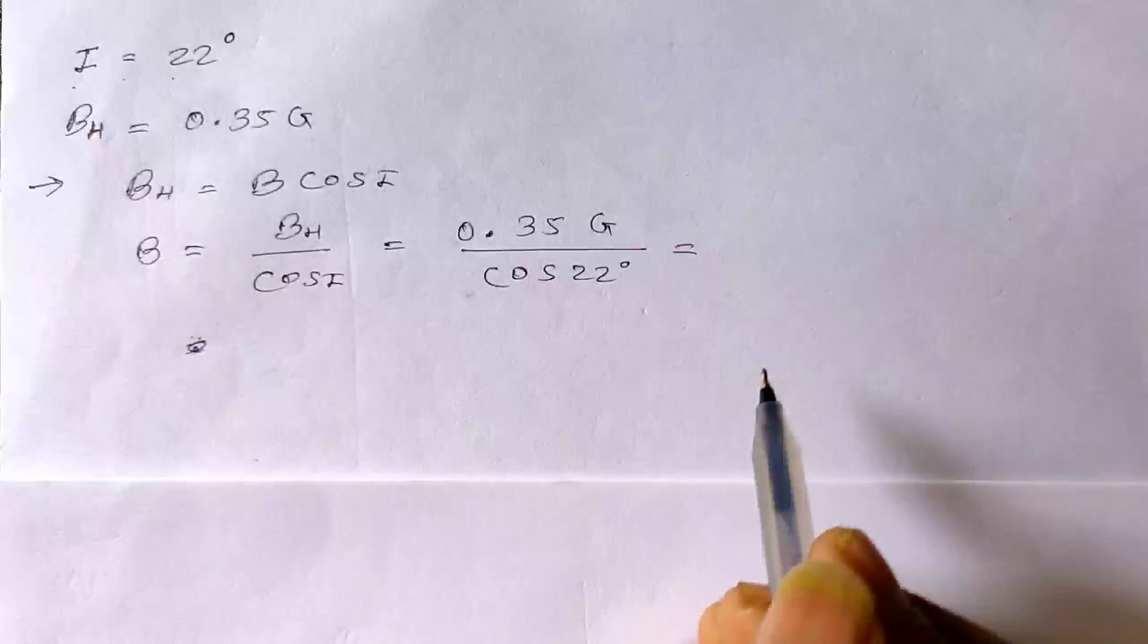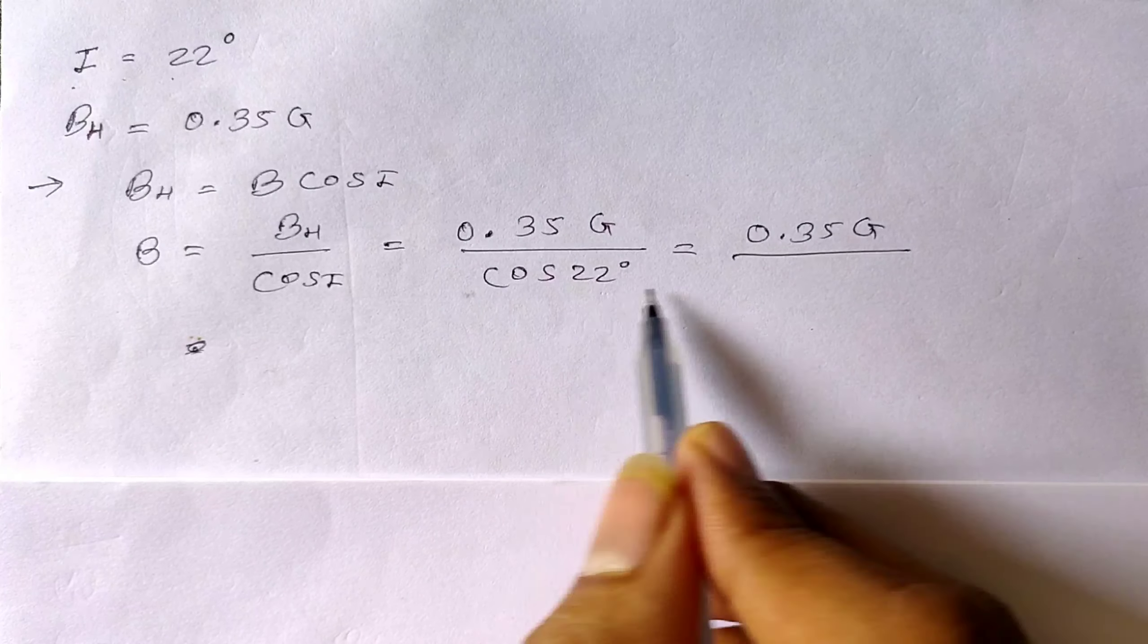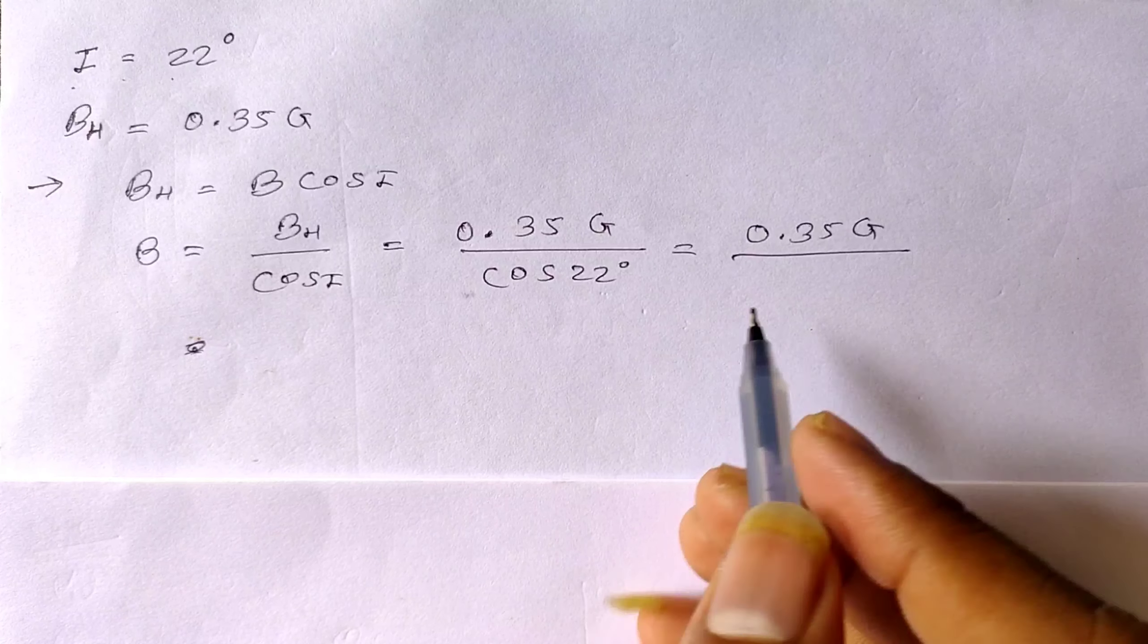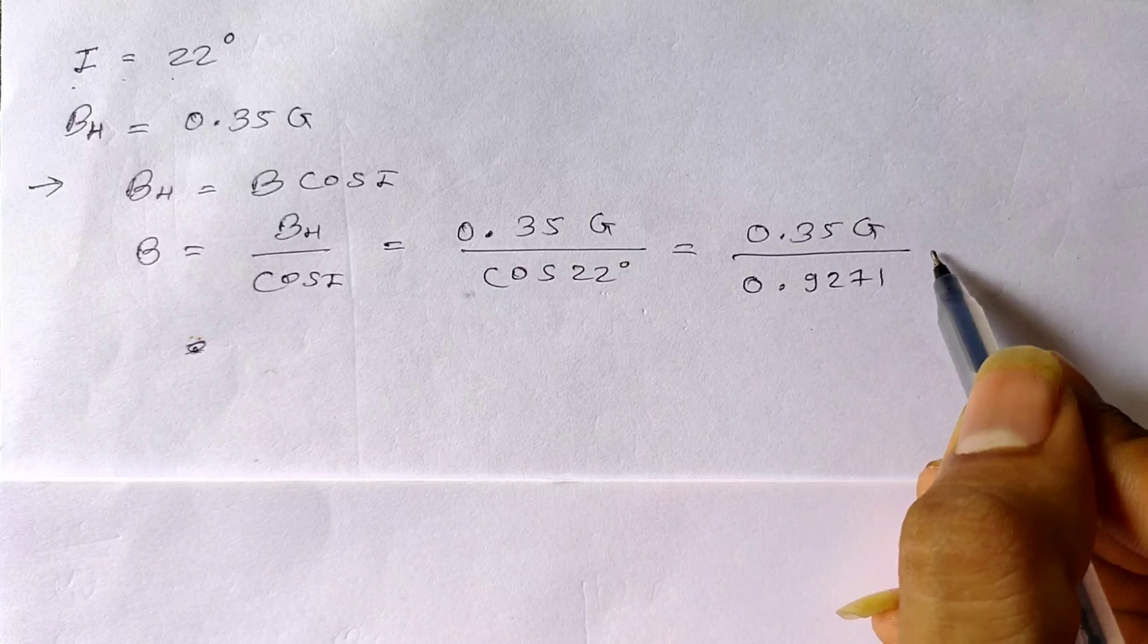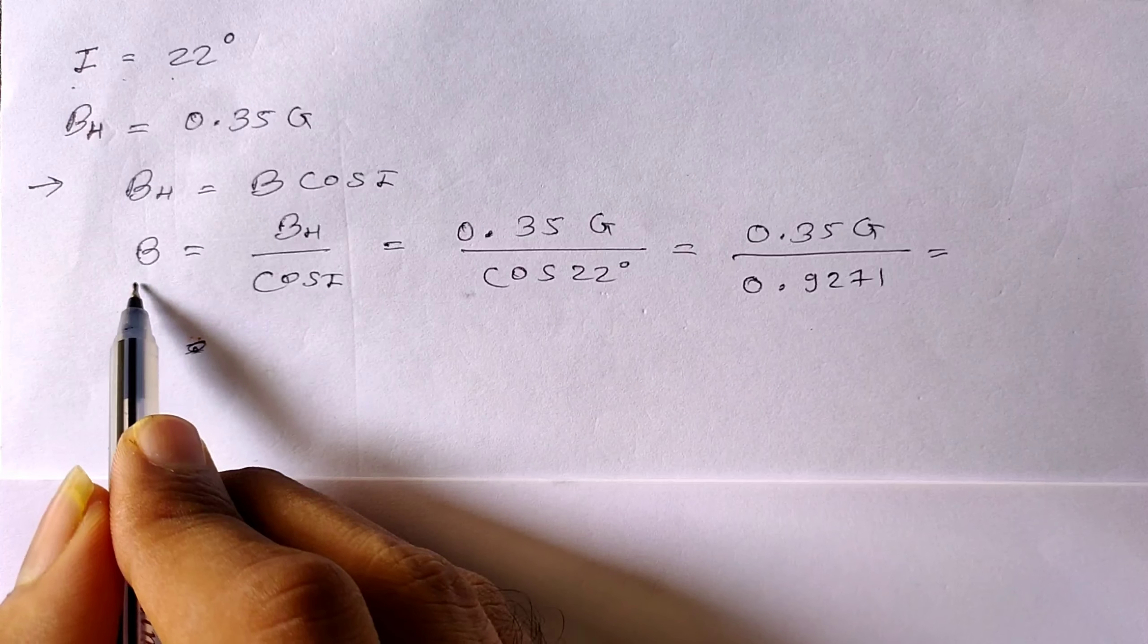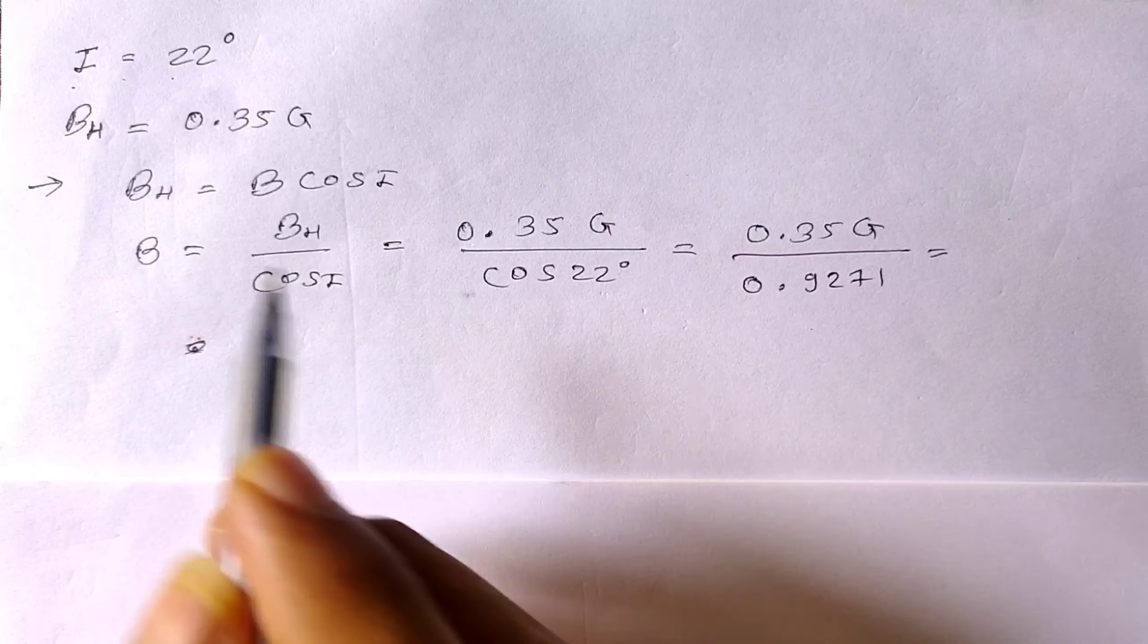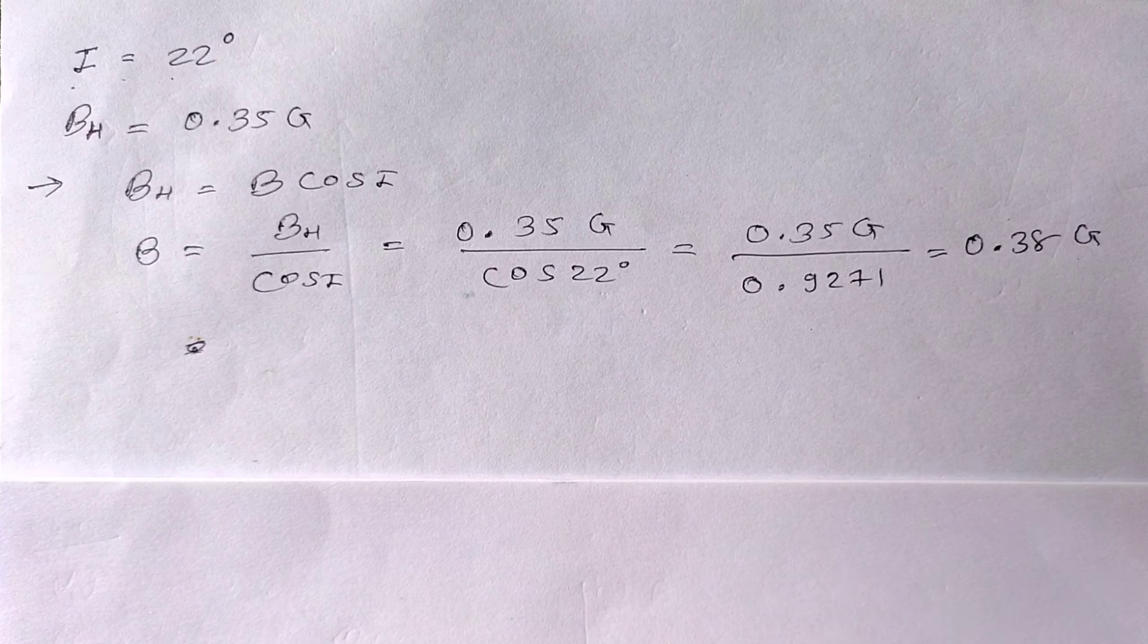If you can see the log table, then you can find the value of cos 22 is 0.9271. So after solving this you will get the answer of Earth's magnitude, or you can say the magnetic field of Earth, is 0.38 Gauss.